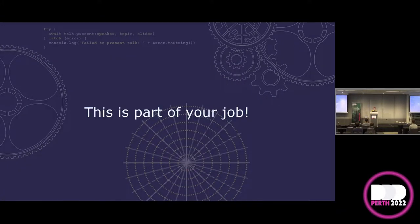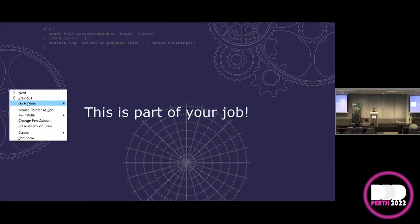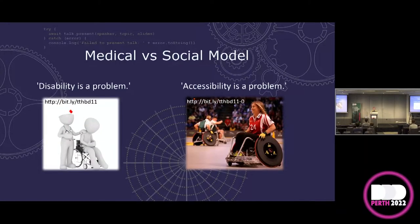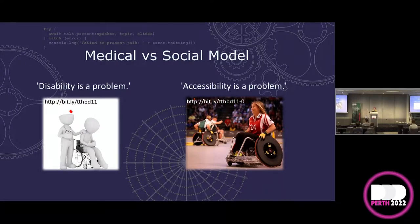There are broadly two different ways to define disability: the medical model and the social model. The medical model holds that disability is a problem we should try to resolve or cure. The social model holds that it's not disability that's the problem — it's accessibility. We shouldn't be trying to change people; we should be trying to change the world around them to make it easier to navigate. I wouldn't dismiss the medical model entirely, but for the purposes of the work we're doing, I'd suggest looking through the lens of the social model.